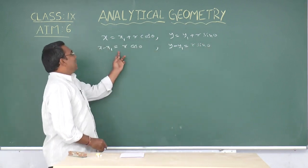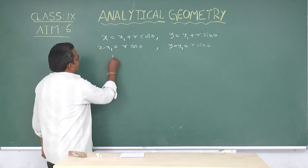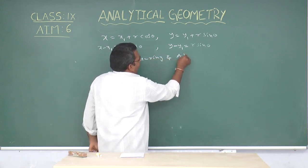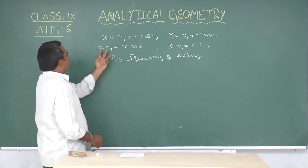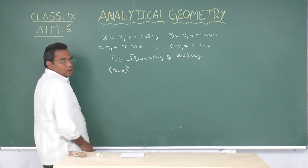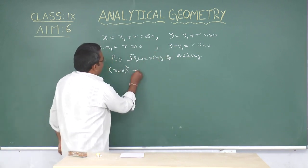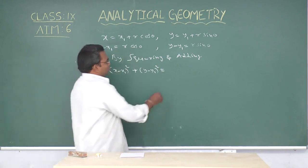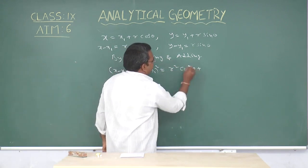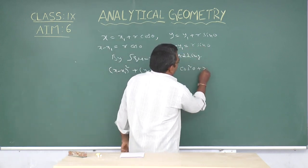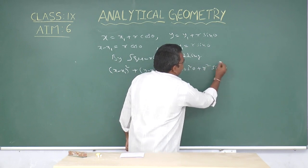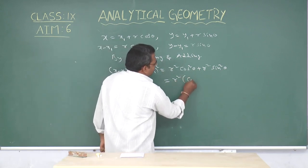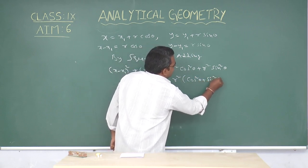Now we are squaring and adding these two equations. By squaring and adding, (x minus x1)² plus (y minus y1)² equals r² cos²theta plus r² sin²theta. By taking r² as common, we get r² into (cos²theta plus sin²theta).